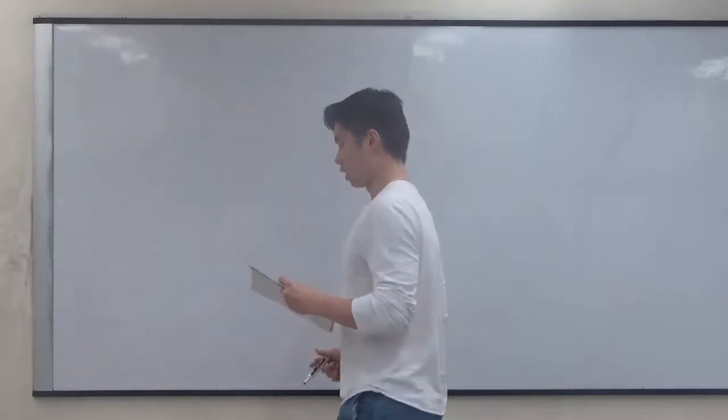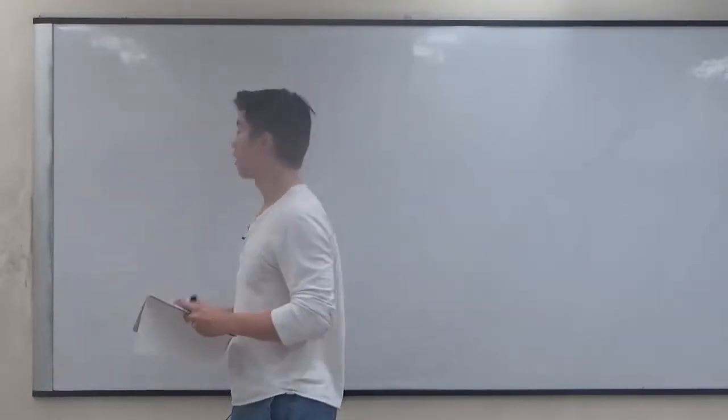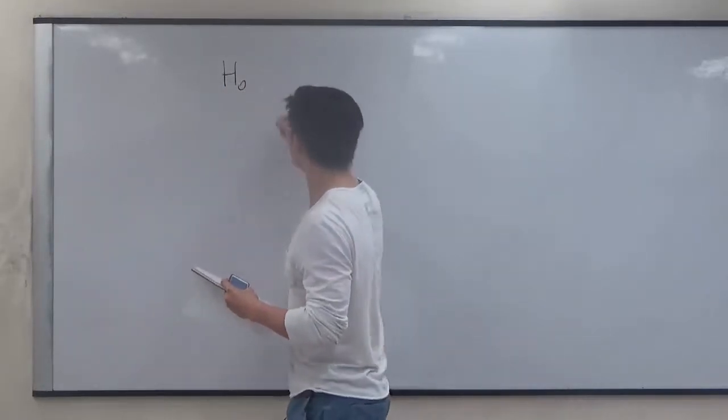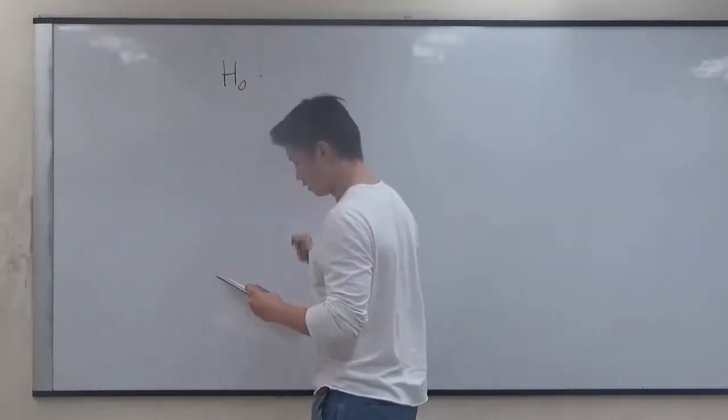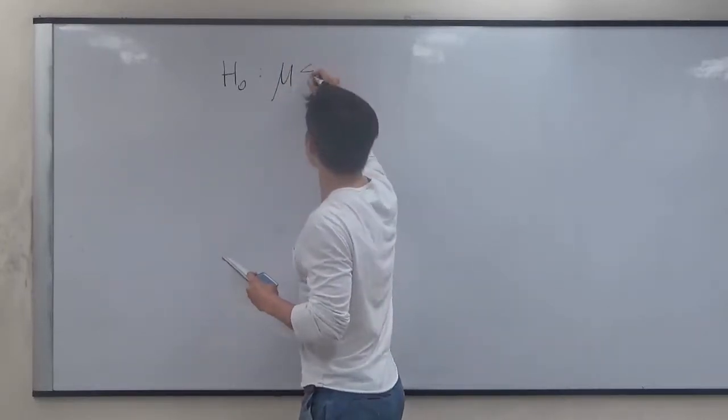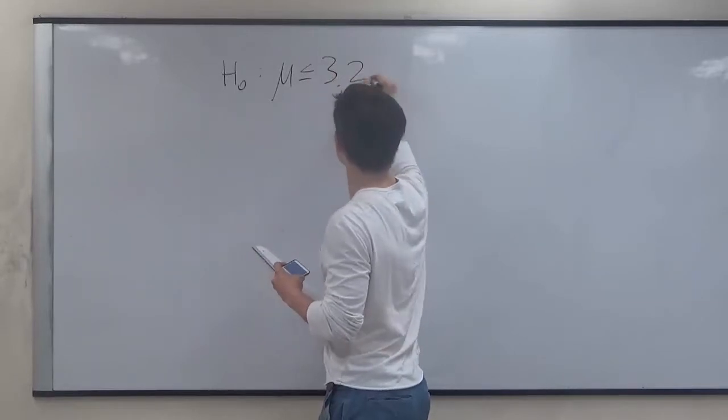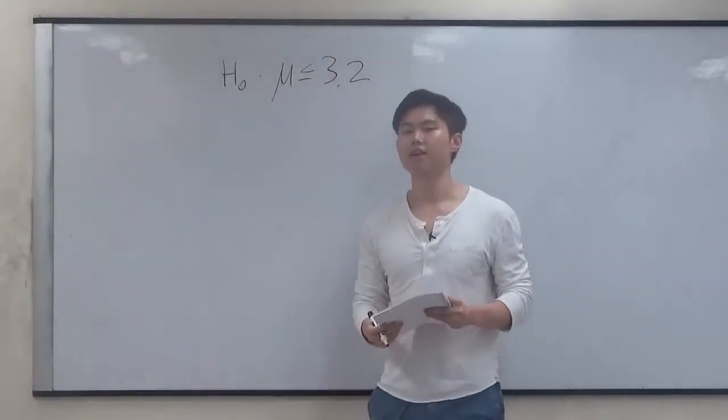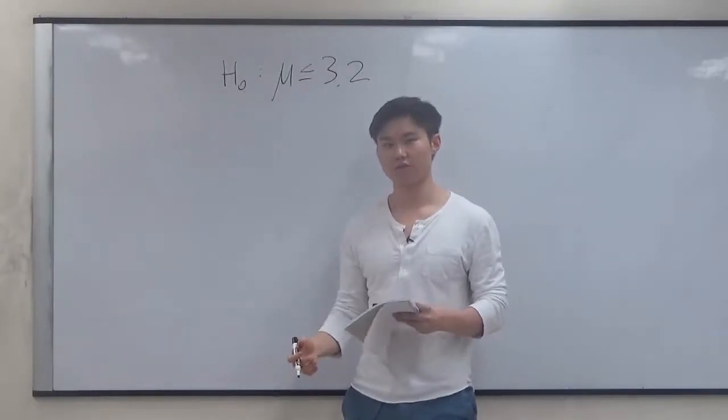So we do a test to see if that claim is true. We can set up our null hypothesis as H0 with the claim, with the given mean, being less than or equal to 3.2 seconds. Now our alternative hypothesis is that it takes longer than 3.2 seconds.